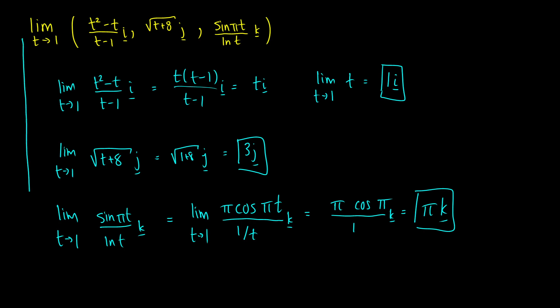So to answer our question, we now have the three components. The limit as t approaches one of this function is going to be one i, which I'll just write as i, plus three j, and then we're going to add pi times the vector k. If we were to write this in vector notation, it would just be one, three, pi.